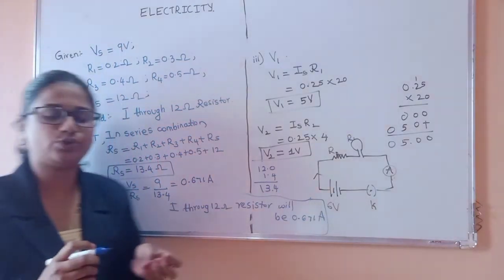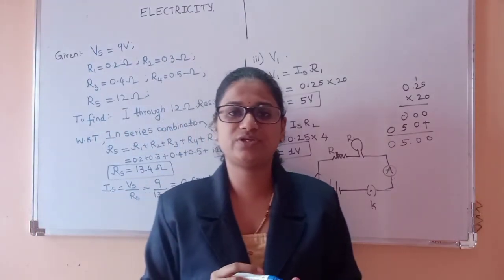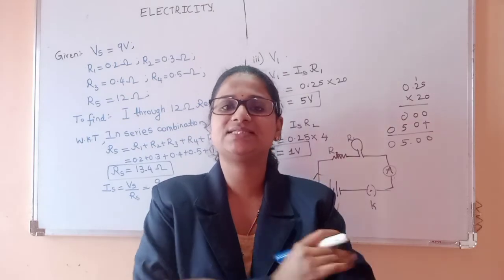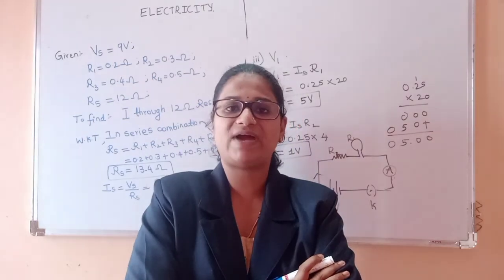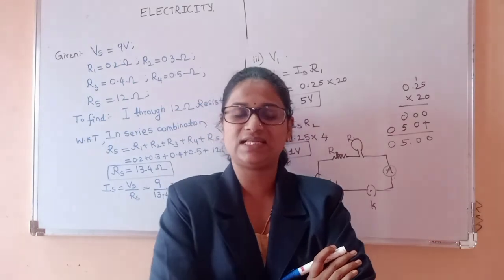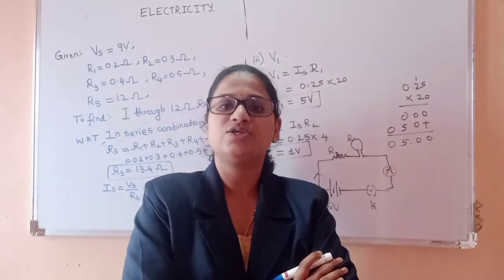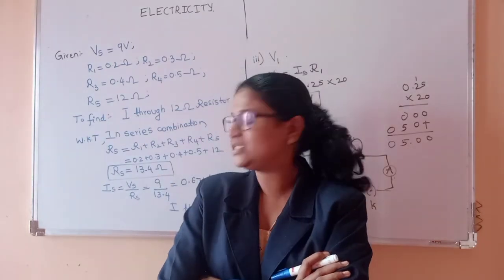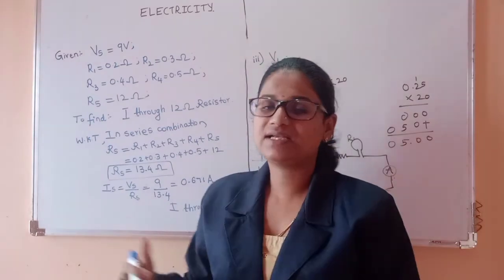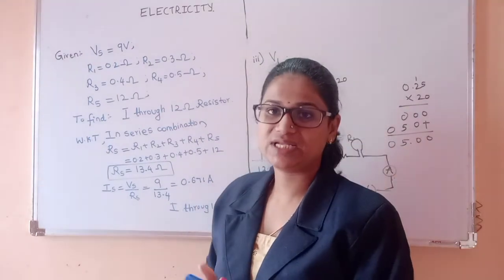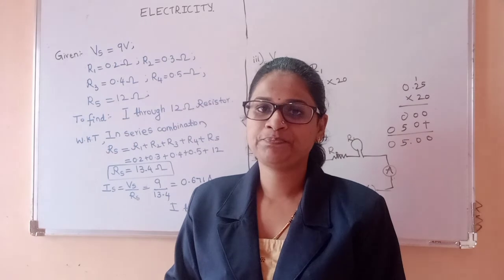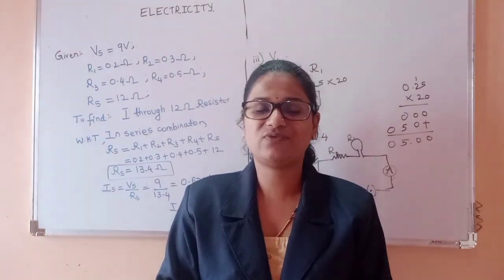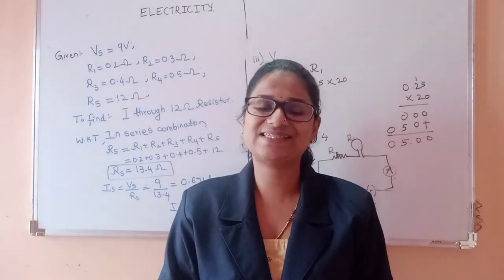So like this we have to solve the problems based on the combination of resistors. First we have to write given, then if possible, if it is a problem which involves finding quantities like resistance, current, etc., in that case please draw the circuit diagrams. Then after that we can solve for the quantities which we have to find the values, like resistance and current. In the next session we are going to learn regarding parallel combination of resistors. Until that, take care, have a nice day, bye bye.